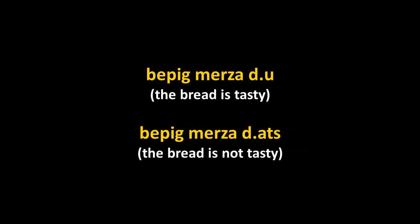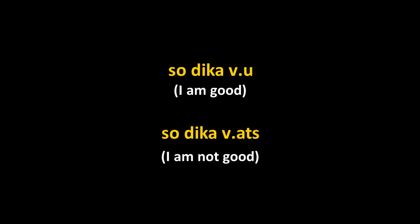Negation: bepig mirza du is 'the bread is tasty.' To say 'the bread is not tasty': bepig mirza datz. The verb 'to be' in Chechen has an irregular negative form -atz, so du becomes datz ('is not'). So dikavu means 'I am good,' and so dikavats means 'I am not good.' A woman would say so dikavu and so dikavats.